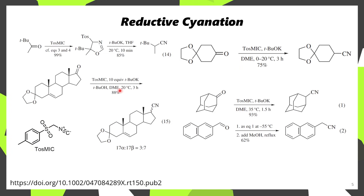TOSMIC can be used for reductive cyanation through a 2+3 cycloaddition reaction, forming a dihydrooxazole. This dihydrooxazole is then eliminated using potassium tert-butoxide or another base, affording the corresponding nitrile.